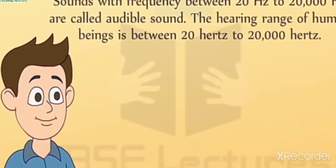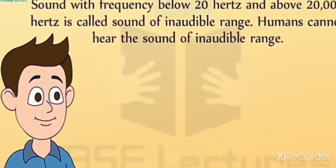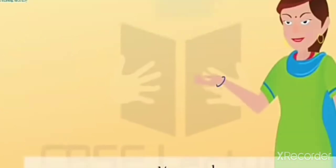There are two types of sound: audible sound and inaudible sound. Sound with a frequency between 20 Hz and 20,000 Hz is called audible sound. The hearing range of humans is between 20 Hz and 20,000 Hz. Sound with frequency below 20 Hz or above 20,000 Hz is called inaudible sound. Humans cannot hear sound in the inaudible range.